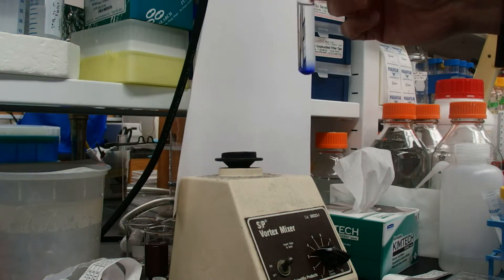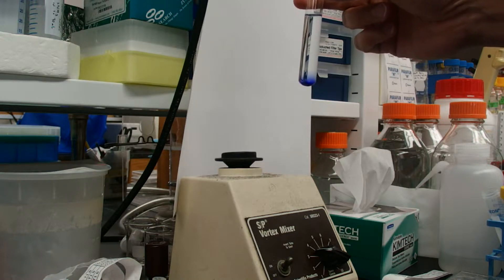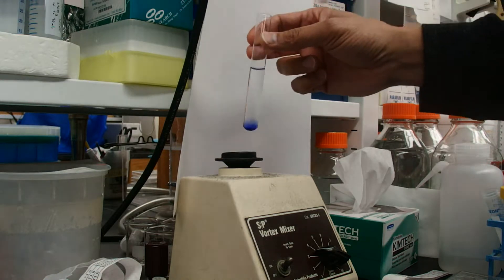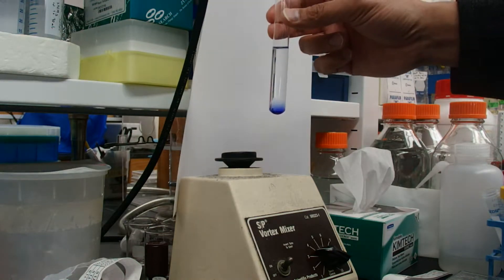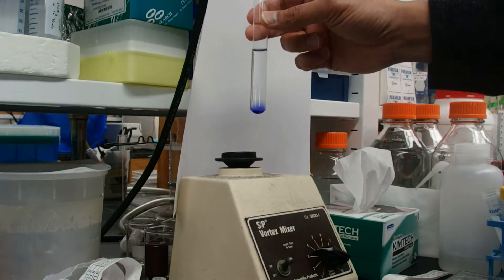So that's why we have devices like a vortexer, or we can mix by pipetting. A vortexer, when done properly, will generate a swirl around the outside of your tube.